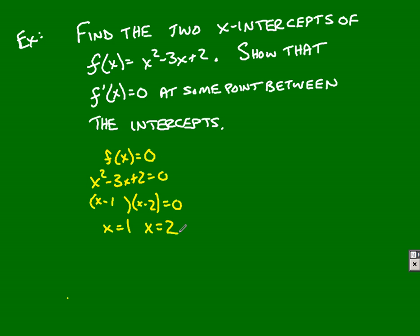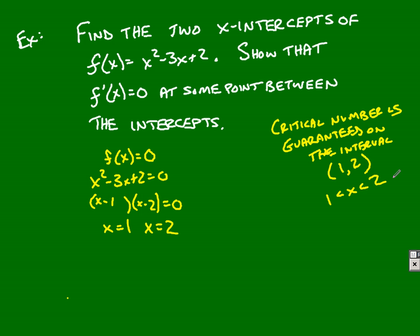So, when it says to show it, you just need to show, well, there's where it's equal, and then there needs to be some point in between that you're guaranteed to have a critical number somewhere in there. So, I would say a critical number is guaranteed on the interval from 1 to 2. I can write that from 1 comma 2, or I can say 1 is less than x is less than 2.